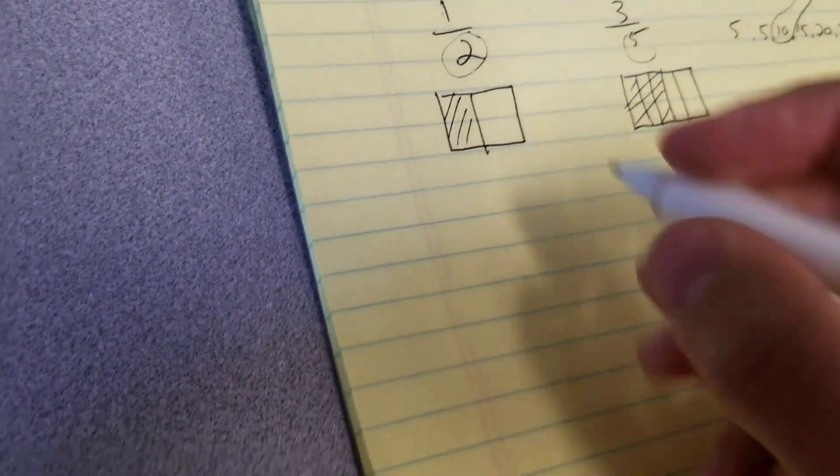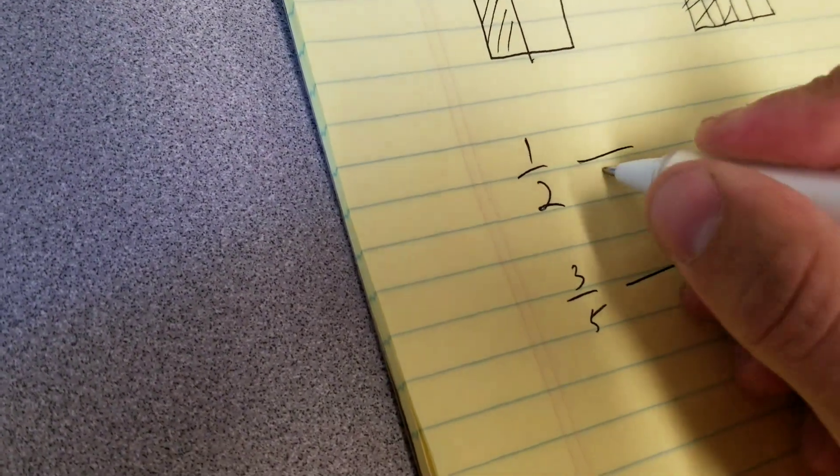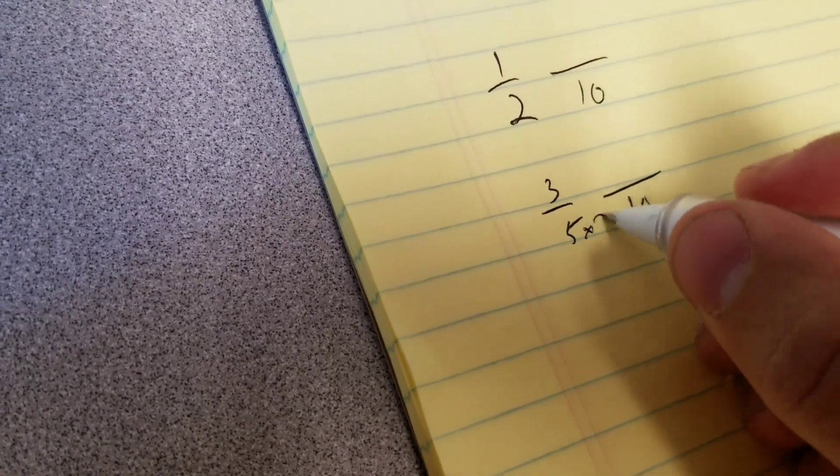So that tells me that 1/2 and 3/5 can both be split up evenly into tenths. How many tenths is 3/5? Well, 5 goes into 10 two times. Whatever I do to the bottom, I do to the top, so 3/5 now becomes 6/10.